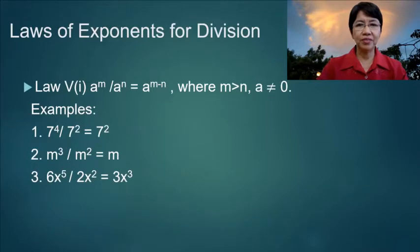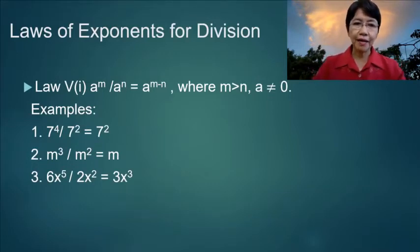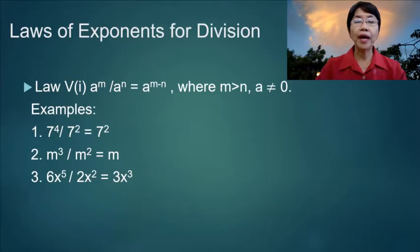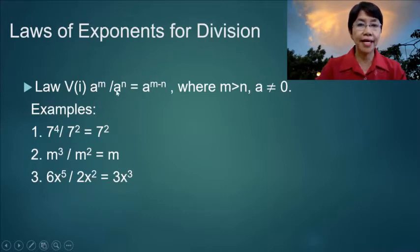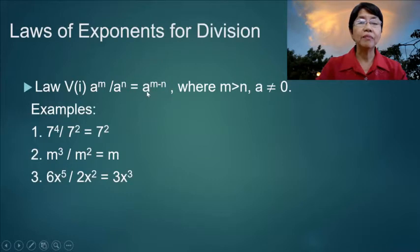Law 5 part 1: a to the m over a to the n, where m is greater than n and a is not equal to 0. That means that if the power of the numerator is greater than the power of the denominator and you have the same base a, then you simply subtract the powers, m minus n, and that will be the power of the base.